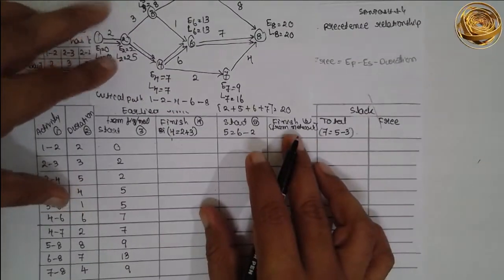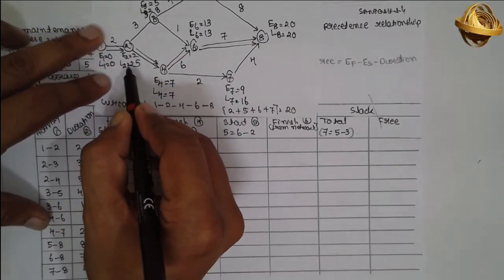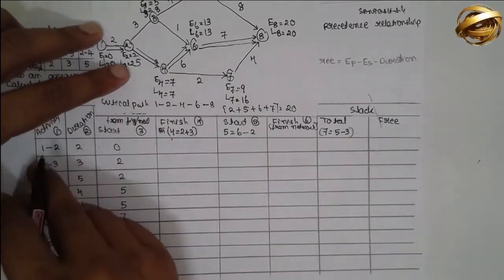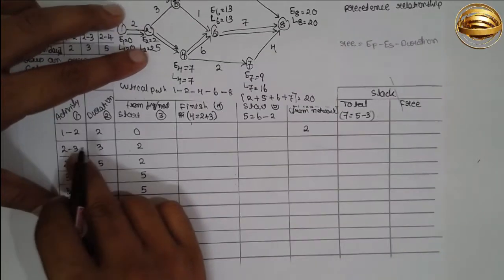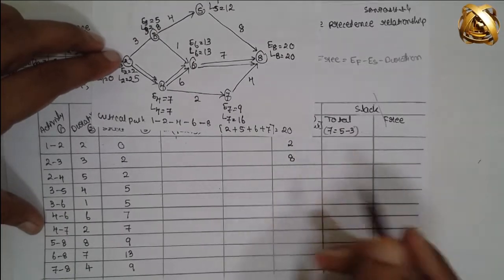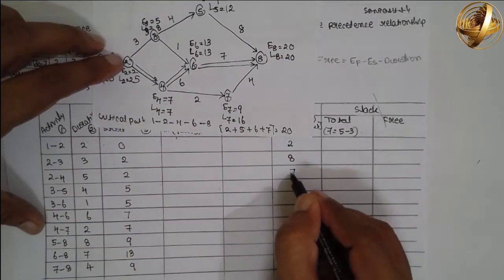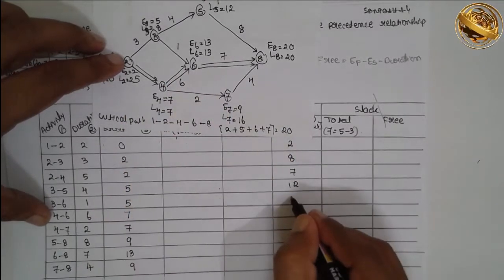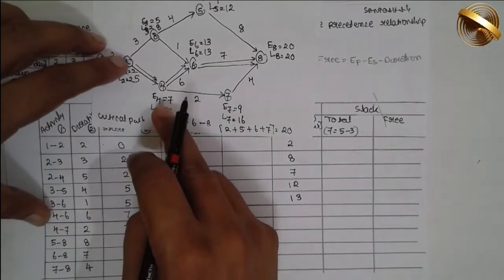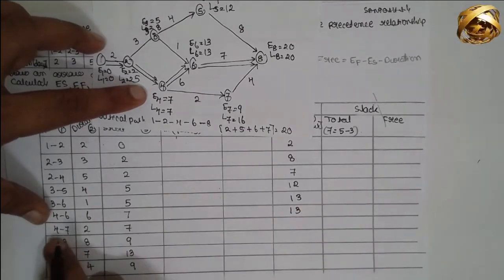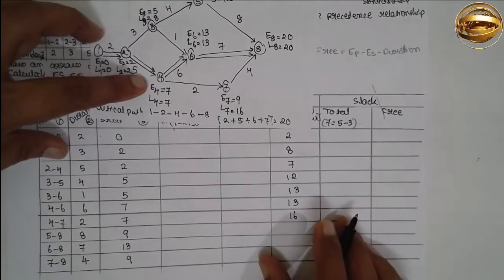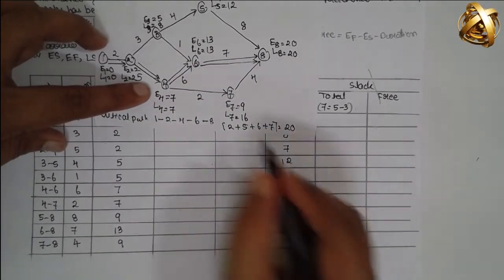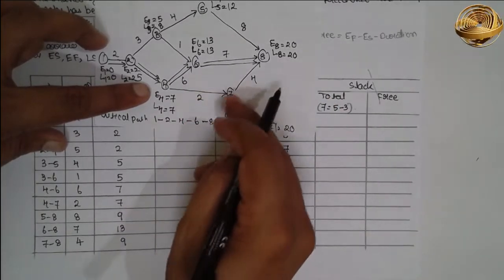Now, latest finish time from the diagram: for 1-2 it is 2; for 2-3 it is 8; for 2-4 it is 7; for 3-5 it is 12; for 3-6 it is 13; for 4-6 it is 13; for 4-7 it is 16; for 5-8 it is 20; for 6-8 it is 20; for 7-8 it is 20.